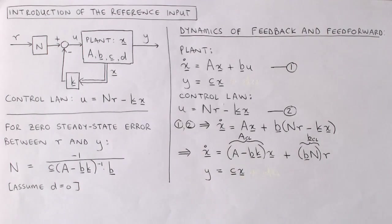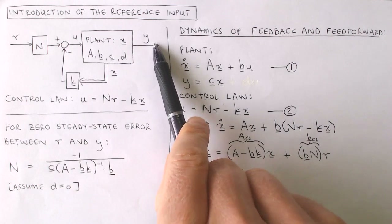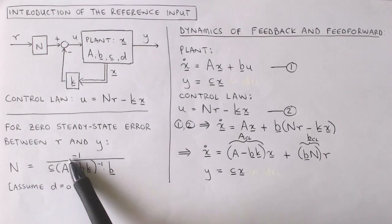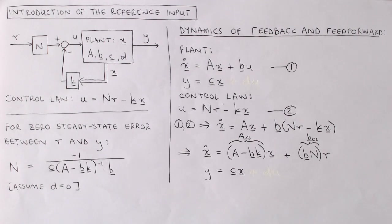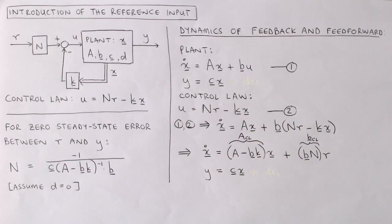The question we address today is how to design the feed forward gain n such that output y equals the reference input r in steady state. It can be shown that we achieve this perfect steady state tracking when n is given by minus 1 divided by c times the inverse of (a minus b k) times b. This result is only valid when the scalar d of the plant model is zero, which we will look at how to achieve at a later stage.